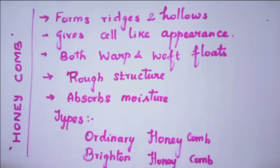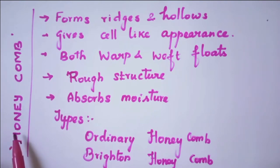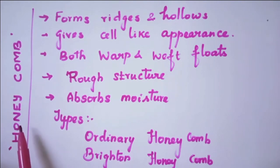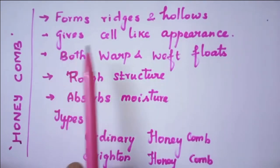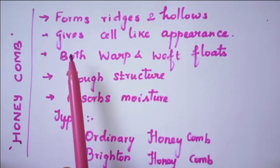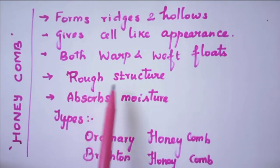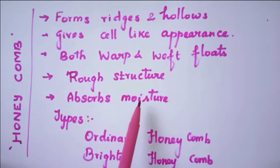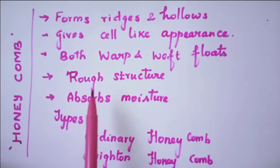Students, today we are going to discuss about honeycomb weave. This is a weave which is used for manufacturing towel fabrics. The name itself refers to a texture which resembles the honeycomb, because it forms ridges and hollows in the fabric surface, giving a cell-like appearance. It creates both warp floats and weft floats in the fabric surface, and it has a rough structure that also absorbs moisture. So these types of honeycomb weave fabrics are mostly used for manufacturing towel fabrics.